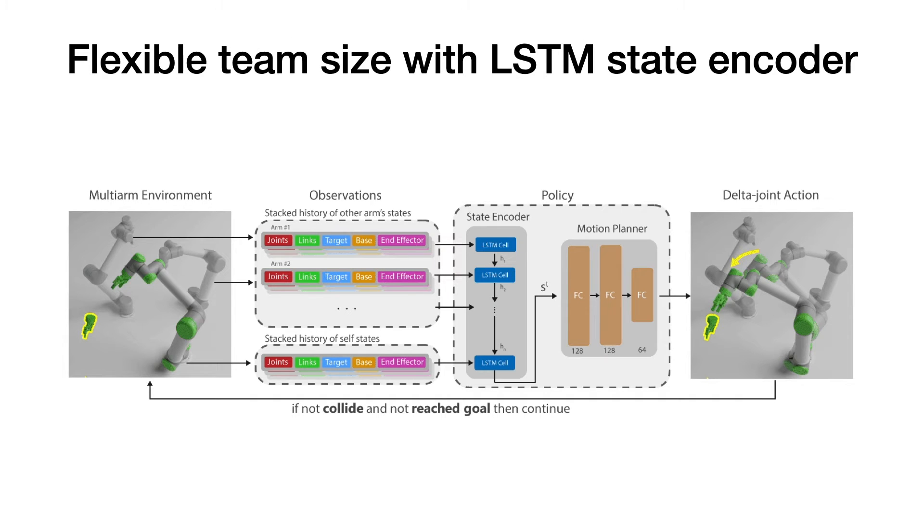We achieve flexibility with an LSTM state encoder, where the observations of other arms are treated as a sequence and processed by an LSTM to extract a fixed-size encoding for the motion planning policy.